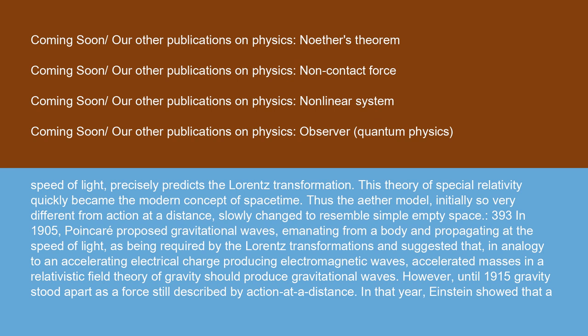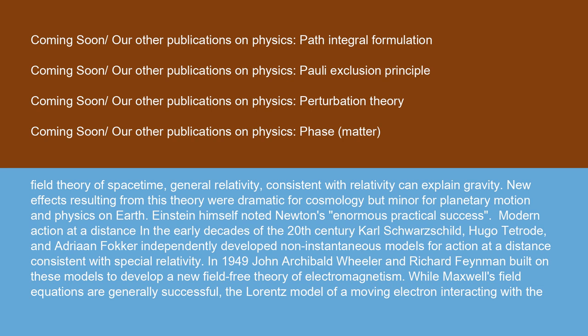In 1905, Poincaré proposed gravitational waves emanating from a body and propagating at the speed of light, as being required by the Lorentz transformations and suggested that, in analogy to an accelerating electrical charge producing electromagnetic waves, accelerated masses in a relativistic field theory of gravity should produce gravitational waves. However, until 1915, gravity stood apart as a force still described by action at a distance. In that year, Einstein showed that a field theory of space-time, general relativity, consistent with relativity, can explain gravity. New effects resulting from this theory were dramatic for cosmology but minor for planetary motion and physics on Earth. Einstein himself noted Newton's enormous practical success.